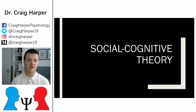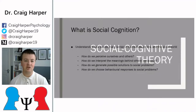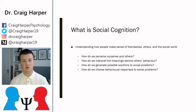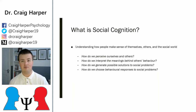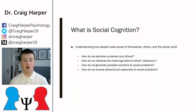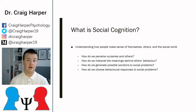Social cognitive theory essentially enables us to understand how people make sense of themselves, of other people, and the social world around them. For example, it asks questions like: how do we perceive ourselves and others? Do we have particular implicit theories about ourselves or other people that might guide the way we interact with them?